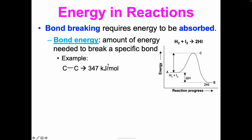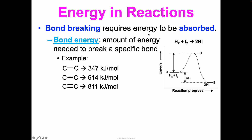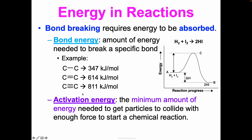To give some context: a double bond between two carbon atoms has a bond energy of 614 kilojoules per mole, so it takes a lot more energy to break that bond. A triple bond between carbon atoms has 811 kilojoules per mole of bond energy. Energy must be absorbed to break these bonds. The activation energy is the minimum amount of energy needed to get particles to collide with enough force to start a chemical reaction.